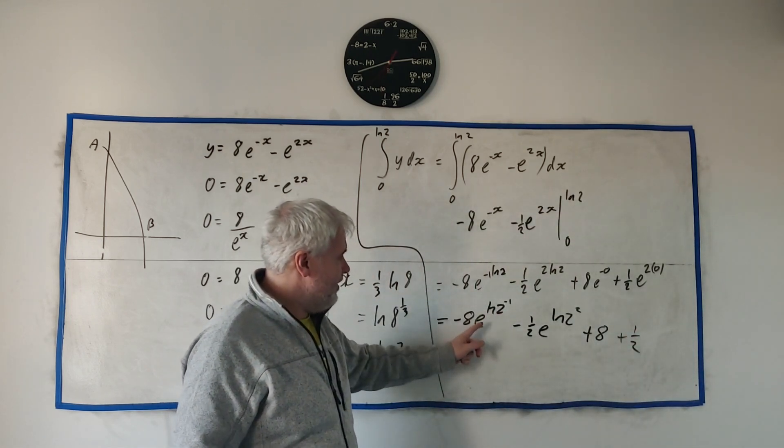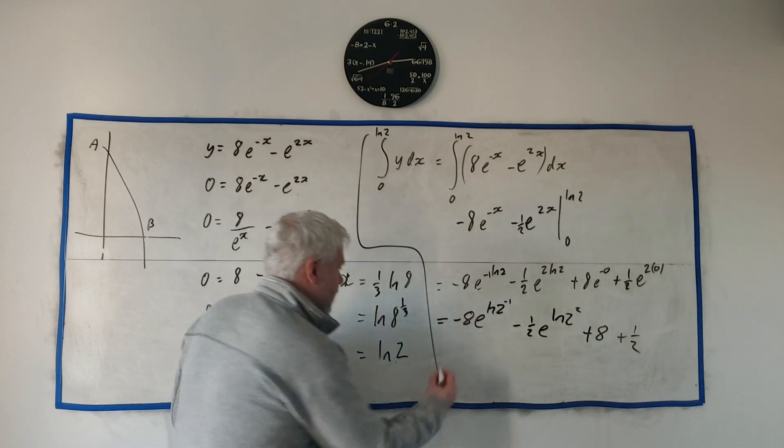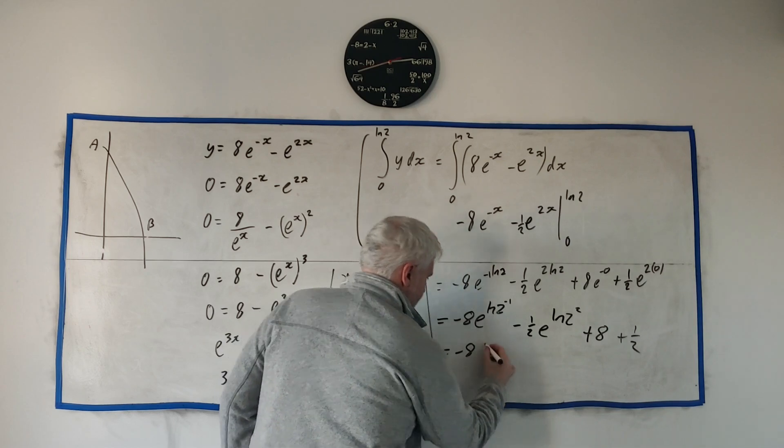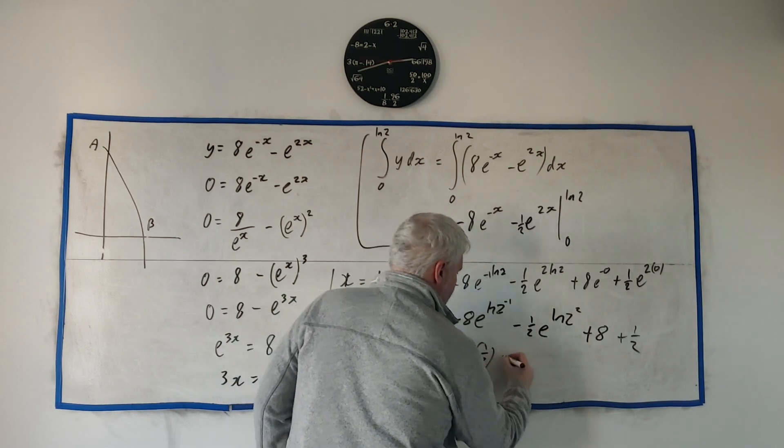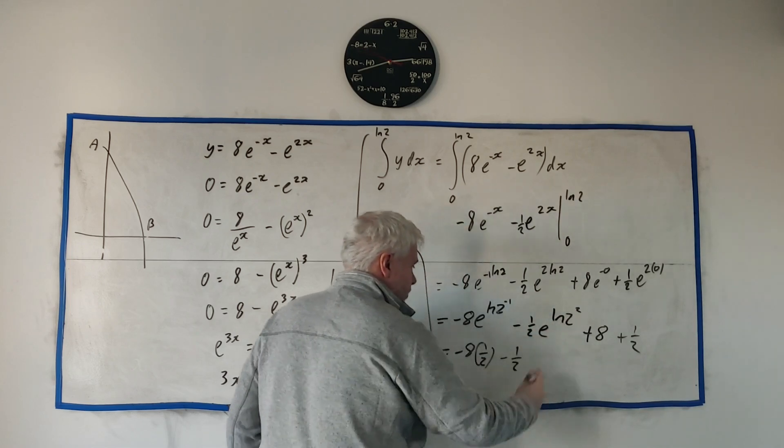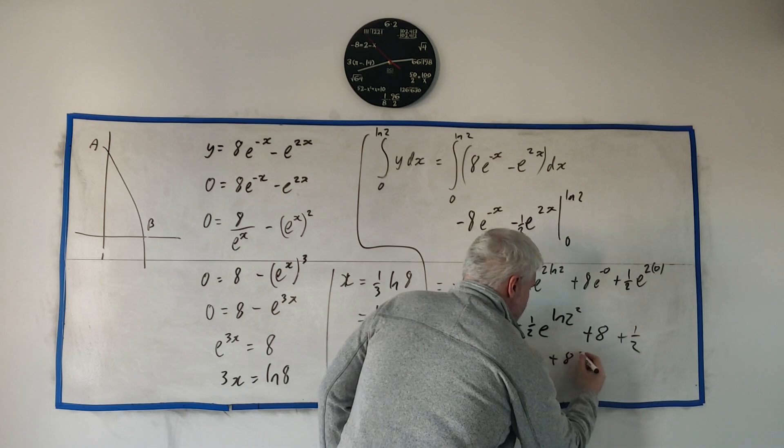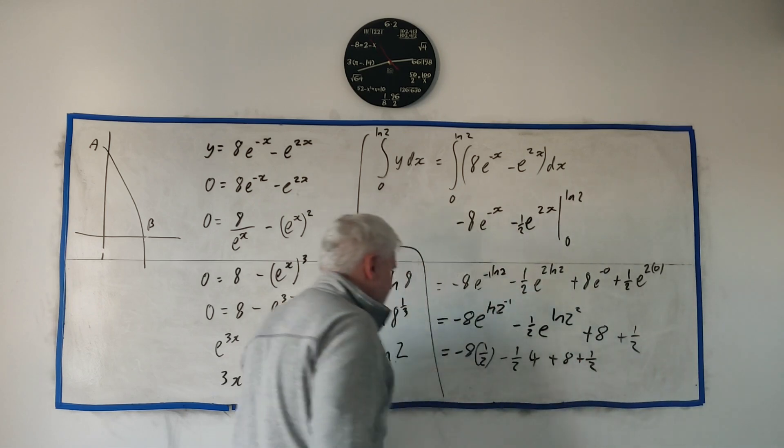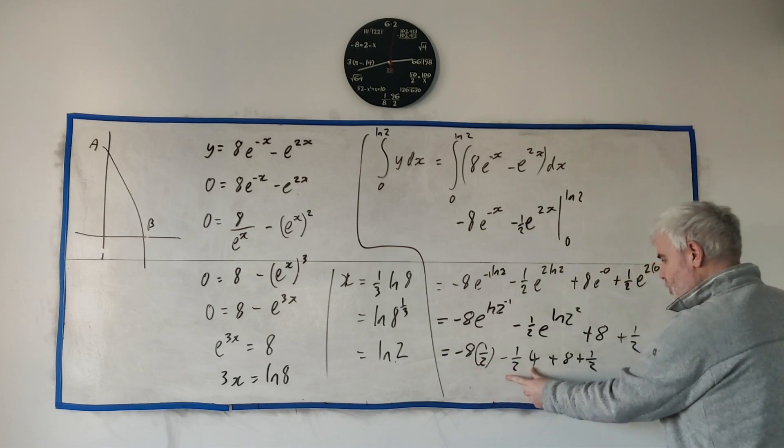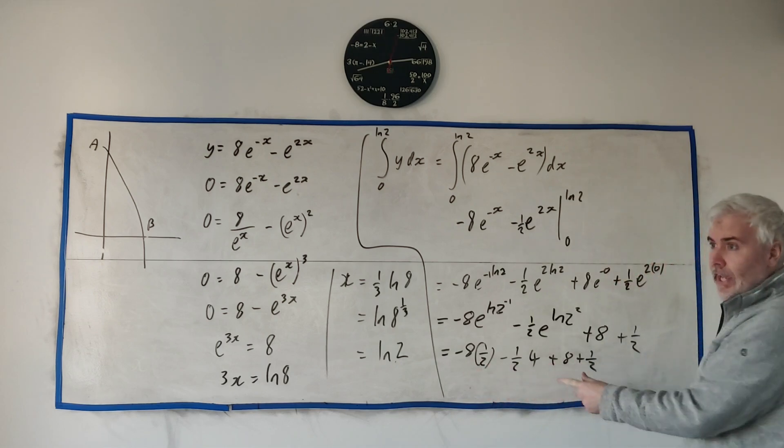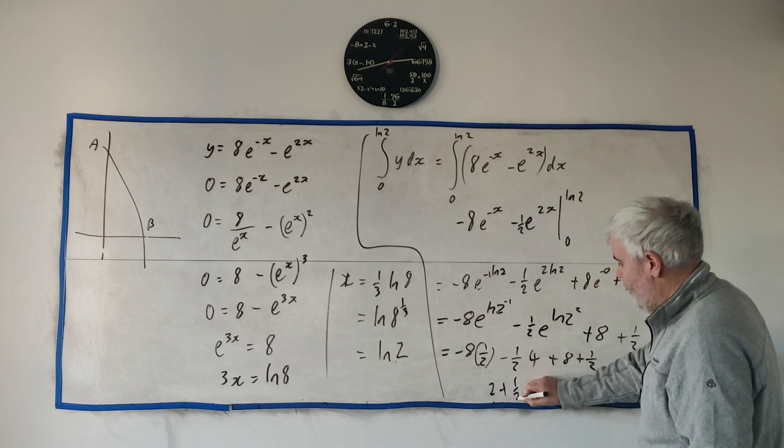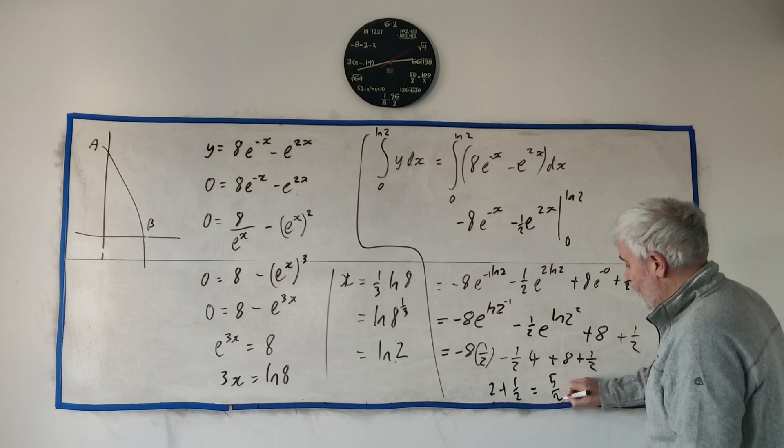Clean that up now. At this point we can cancel. The e and the natural logs can cancel. We get minus 8 and that's a half. Here we get minus a half. That'll cancel and we get 2 to the power of 2, which is just 4 plus 8 plus 1 half. We add all this together. We get minus 4, minus 2, plus 8, that's plus 2, 2 plus 1 half. And the answer is 5 over 2.